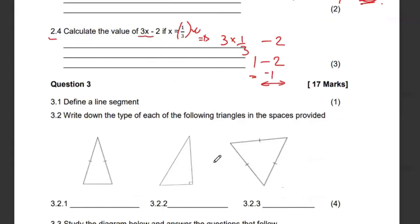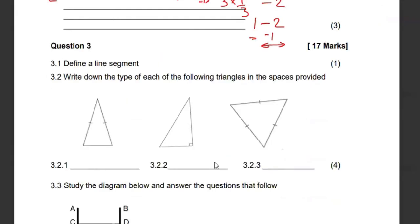Then question number 3, they want us to define what a line segment is. A line segment is basically a line with a starting point and an end point. In other words, for as long as it starts from somewhere, maybe that is A and then this is B, that's known as a line segment.